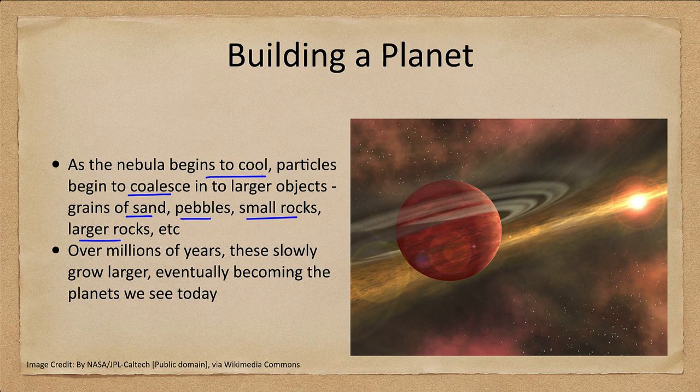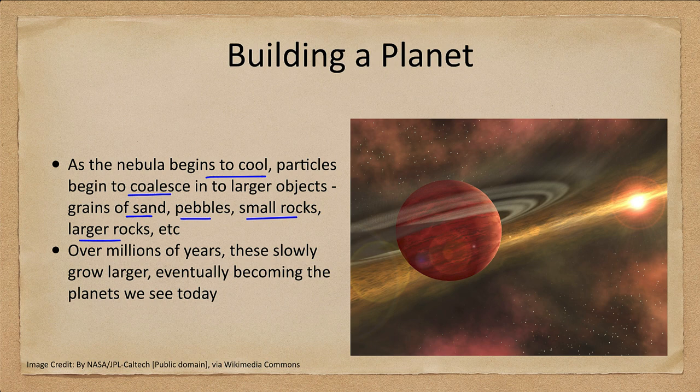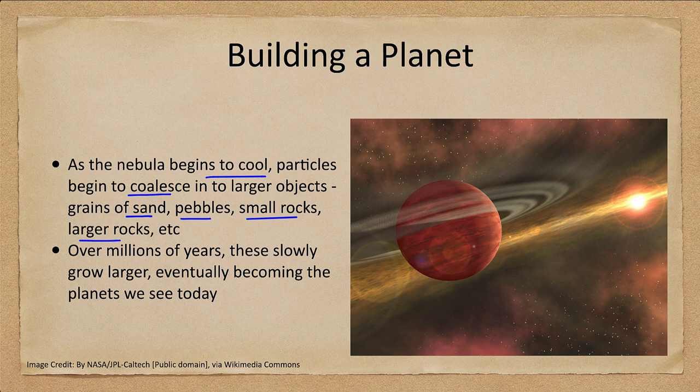Here we see an artist conception of what our solar system might have looked like in these early times with a planet forming, with a debris ring around it, and still our Sun there in the distance with a lot of debris still around it. Our solar system at this point was a much messier place than it is today.